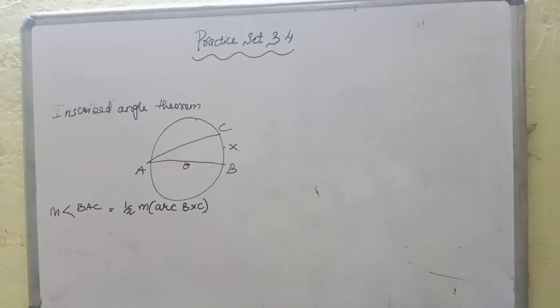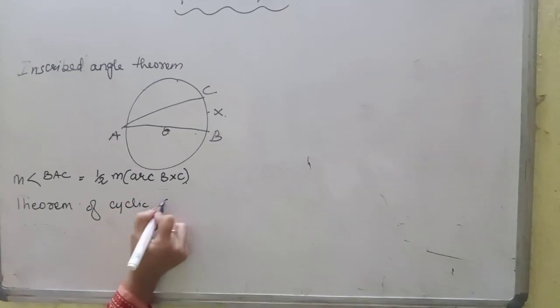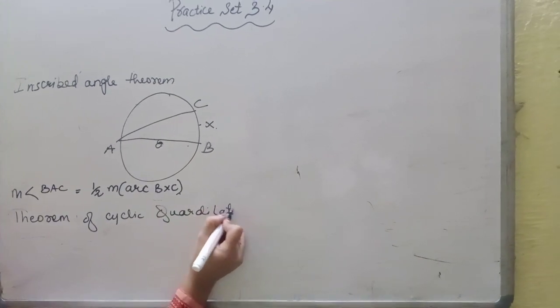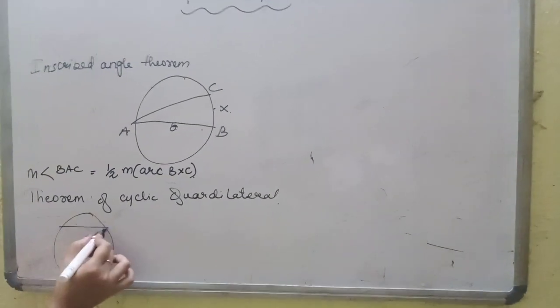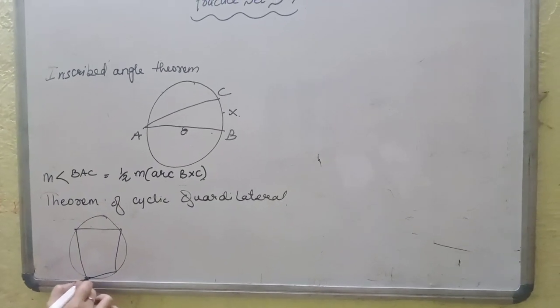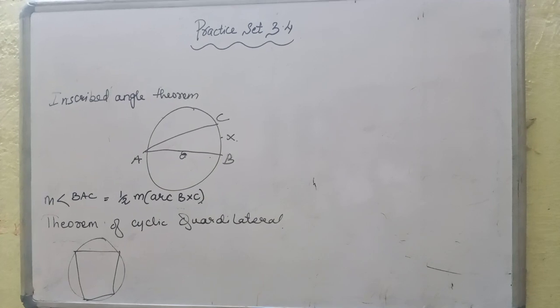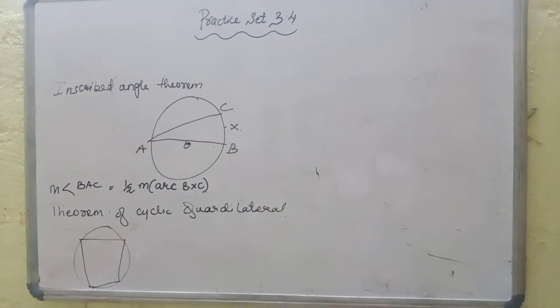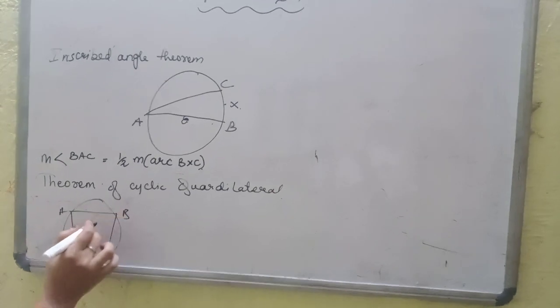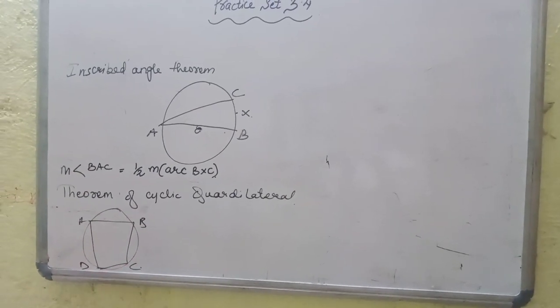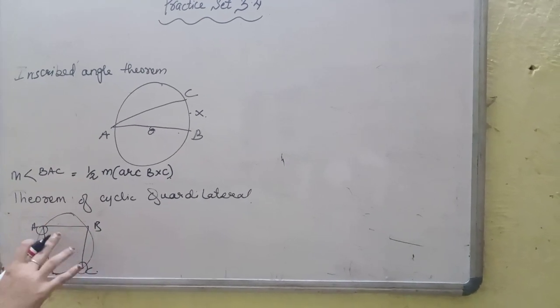Now, the second one is theorem of cyclic quadrilateral. In this now, one circle is there, there is one quadrilateral inside the circle. Opposite angles of cyclic quadrilateral are supplementary.